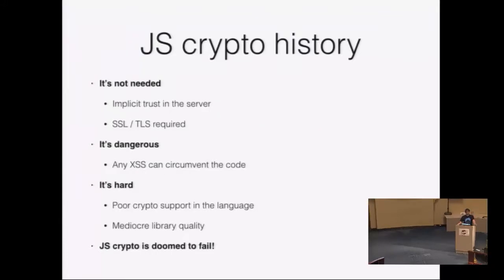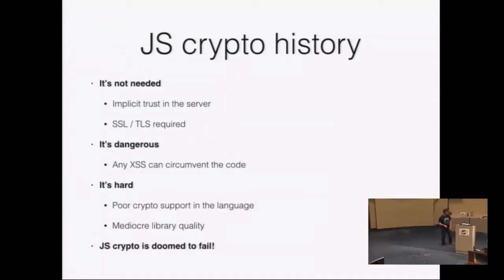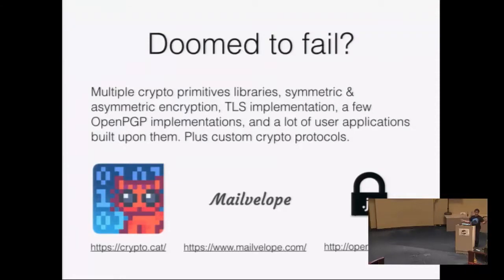It's not only that it's not needed, it's also dangerous. It's dangerous because of cross-site scripting, a very popular flaw in web applications. For crypto code, executing attacker's code in the same namespace is immediately destructive — the attacker can extract keys, plain text, and basically circumvent any cryptographic operations. It's also hard because JavaScript is not the most convenient language for implementing crypto, and the libraries present at the time were of mediocre quality. The general view was that JavaScript crypto is necessarily doomed to fail — yet it became widely adopted.